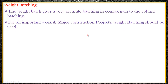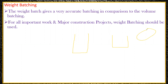Weight batching gives very accurate batching in comparison to volumetric batching for a very obvious reason. In volumetric batching, there is a fluctuation in the volume taken. If you're using a bucket, you are going to get a different volume. If you're using the farma boxes, you get a different volume. If you're making use of the pan, there also you get a different volume.